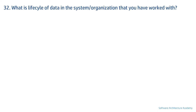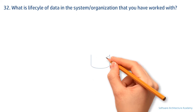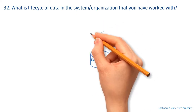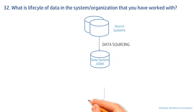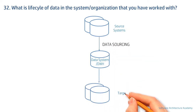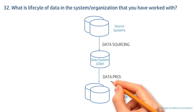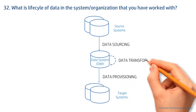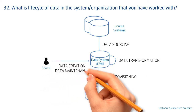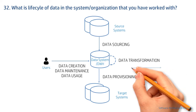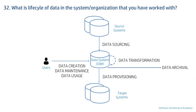The next question is: what is the life cycle of data in the organizations you have worked with? The intent is simple — whether you understand how data is created and destroyed. Data is sourced from source systems and provisioned to target systems. It is created by users, maintained and used for business purposes. Finally, once data has served its purpose, or if there is a regulatory requirement like GDPR, data is either archived or purged.